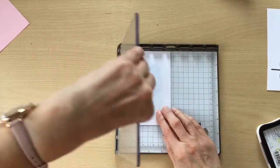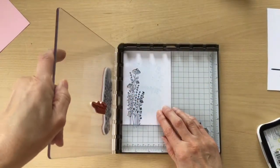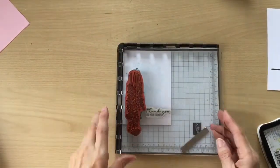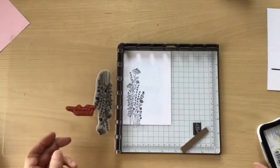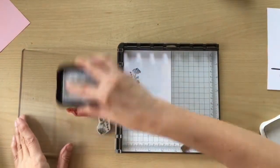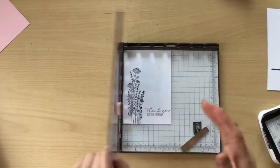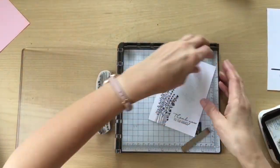And then on the other side of the platform I've put my sentiment. I've gone for thank you for your kindness and again I'm using the black ink. There we go. I'll take that out now.